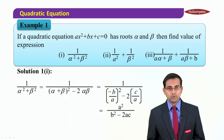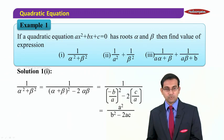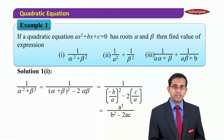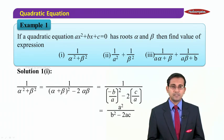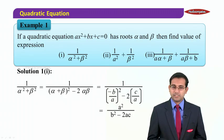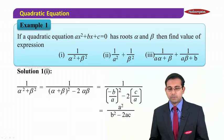So the value of the first expression, 1/(α² + β²), expressed in terms of a, b, and c, turns out to be a²/(b² − 2ac). That was the first expression.